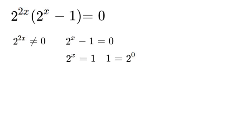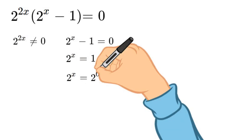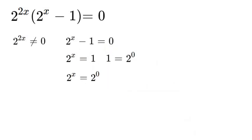So since we're working with 2 to the power of x, if we put 2 to the power of 0, that equals 1. Now 2 to the x equals 2 to the power of 0, which we now know that x is equal to 0.